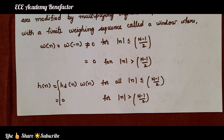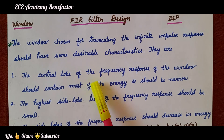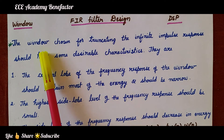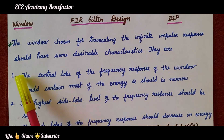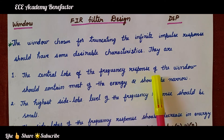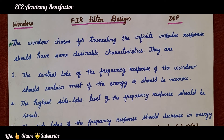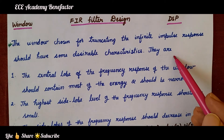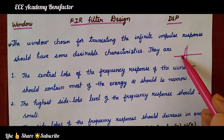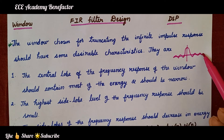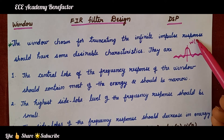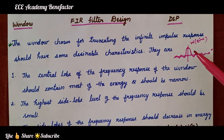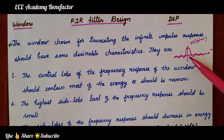Let us now see the characteristics of a window and the different types of windows. The window is a finite weighing sequence. The window chosen for truncating the infinite impulse response should have some desirable characteristics. The first characteristic is: the central lobe of the frequency response W(e^jω) of the window should contain most of the energy and should be narrow.